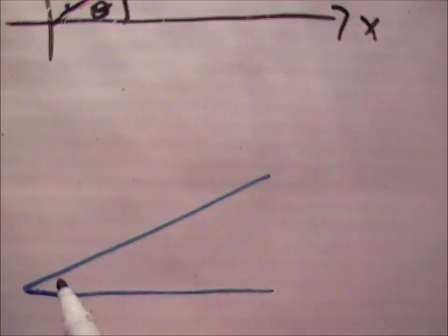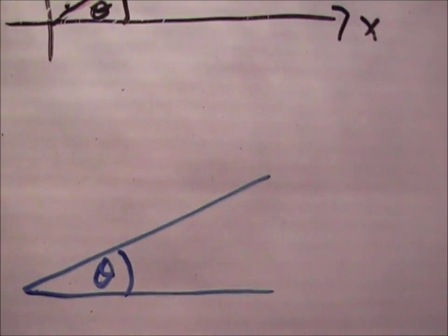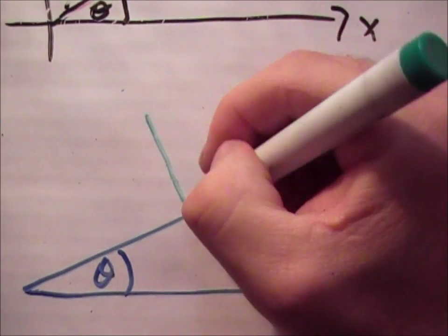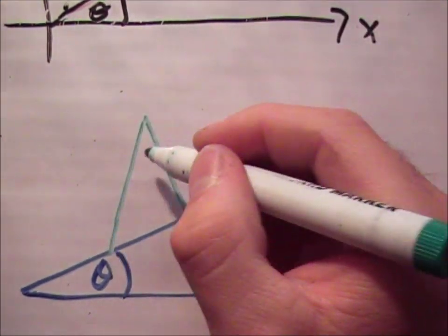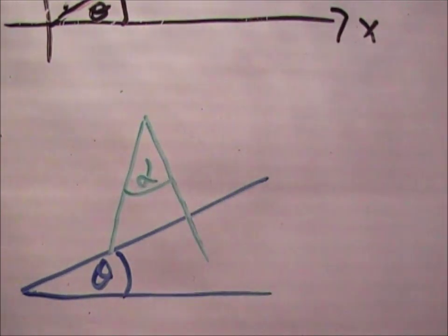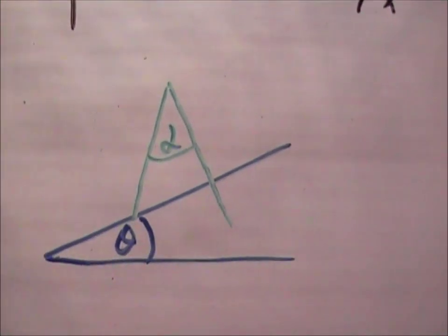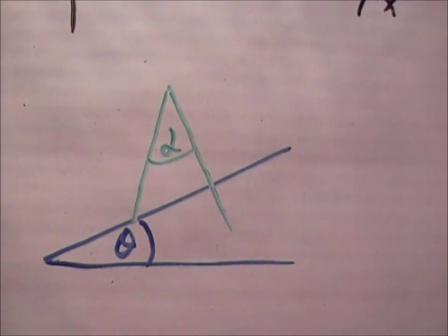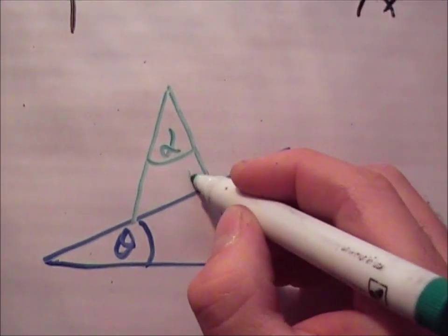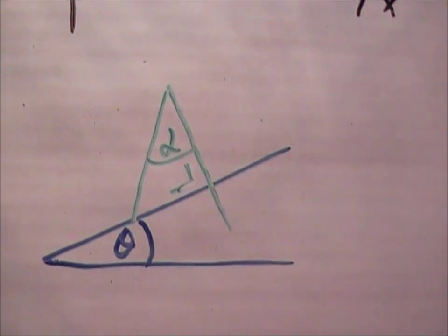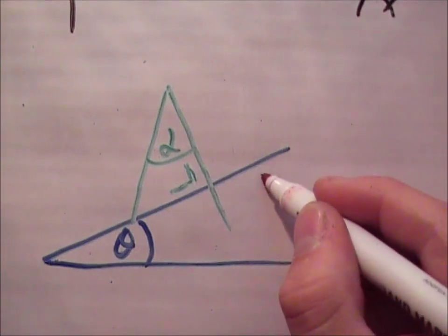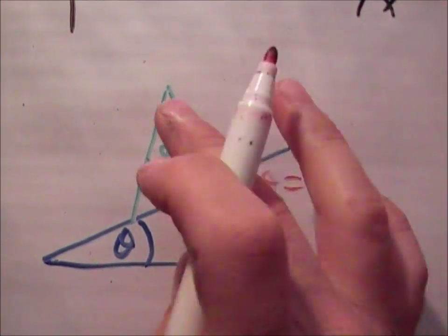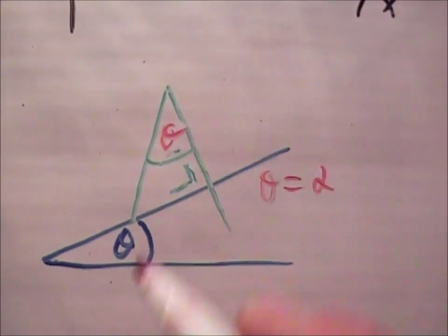If I have two angles, one like this I'm going to call it theta, and another in green I'm going to call it alpha. Now where the two angles intersect each other at a right angle, if they intersect each other at a right angle, then they will be equal. So in this case theta equals alpha.